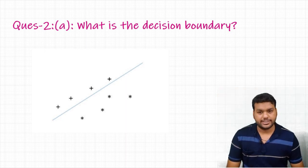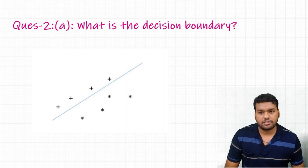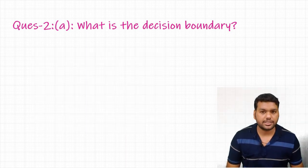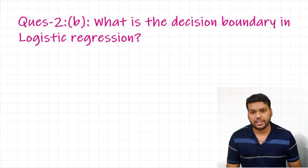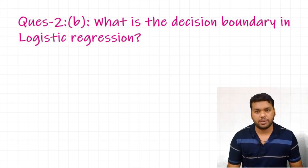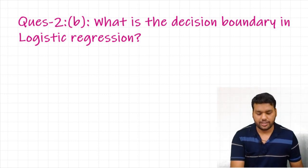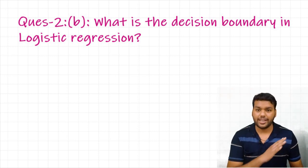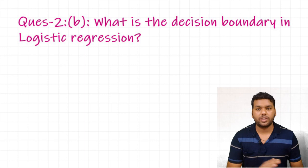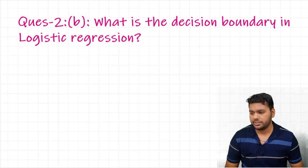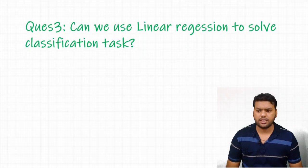Once they ask what is the decision boundary, they can follow up with: what is the decision boundary in logistic regression? In logistic regression, the decision boundary is a hyperplane or a line surface. Please make sure you don't say in the interview that the decision boundary in logistic regression is a sigmoid — sigmoid is an activation function, it's not a decision boundary in logistic regression.